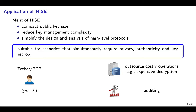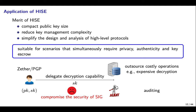HISE enjoys compact public key size, which helps to reduce key management complexity and simplifies the design and analysis of high-level protocols. These merits make HISE suitable for scenarios that simultaneously require privacy, authenticity, and key escrow. For example, in Zcash and PGP, individual users may need to delegate the decryption capability to a third party to outsource costly operations or for auditing purposes. If using ISE, such delegation would also compromise the security of the signature. But if using HISE, the strong joint security ensures that one can safely delegate decryption capability without breaching the security of the signature.